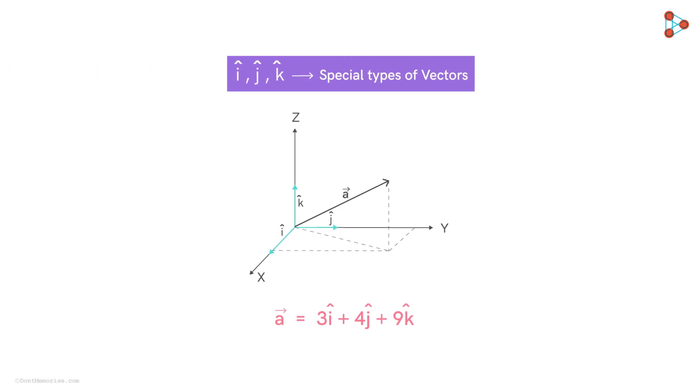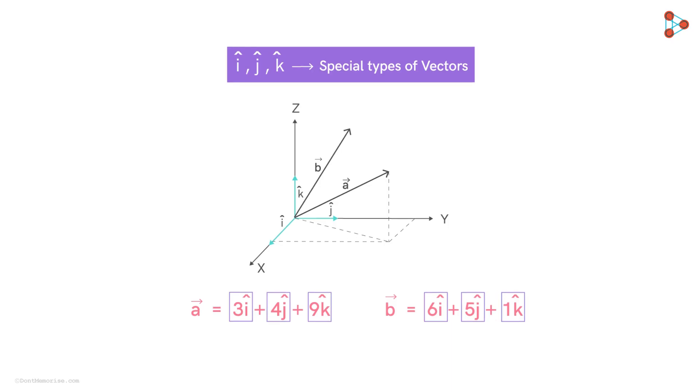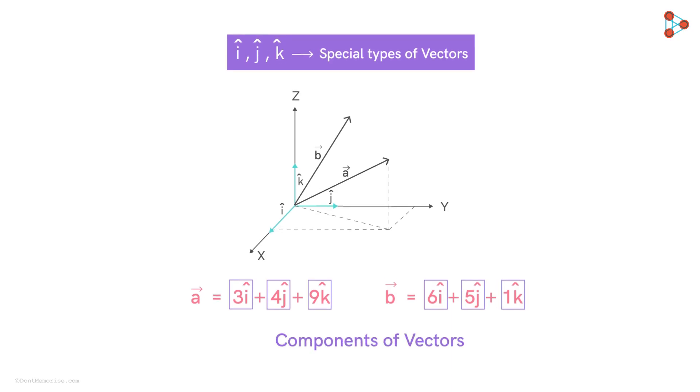For example, consider another vector b in three dimensional space decomposed as this. Basically, we can say that these two examples tell us that any vector in a 3D space is just made up of these three vectors. Here, these individual vectors are called the components of the vector. The thing is that, as we learn more about vectors, we will see how important and useful this idea is.